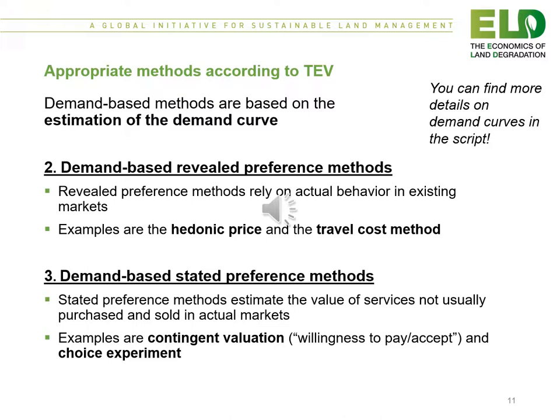The demand based revealed preference methods rely on actual behaviour in existing markets. Examples are the hedonic price and the travel cost method. Demand based stated preference methods rely on stated values of services not usually purchased and sold in actual markets. Examples are contingent valuation, which is the willingness to pay or accept, and choice experiments.